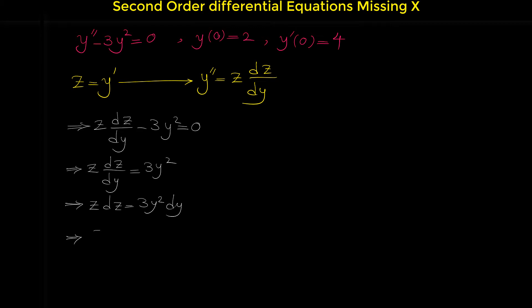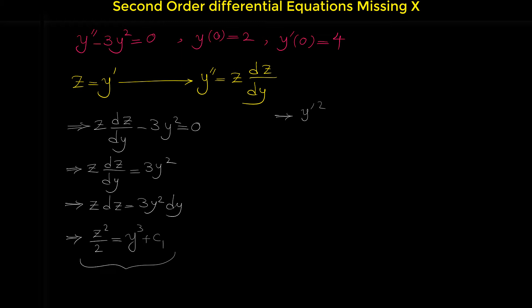The integral of z dz is z squared over 2, and the integral of 3y squared is y cubed. Don't forget to add a constant. Note that z is actually y prime. So if we replace z with y prime, we can write this as y prime squared over 2 equals y cubed plus c1.